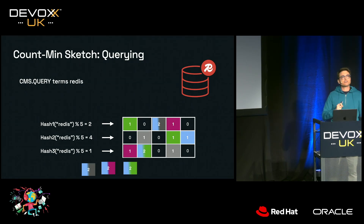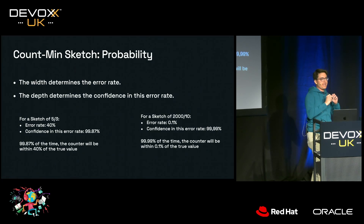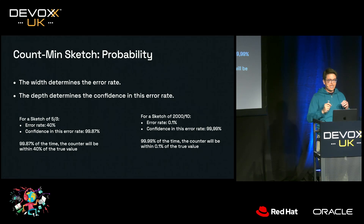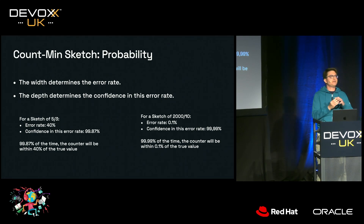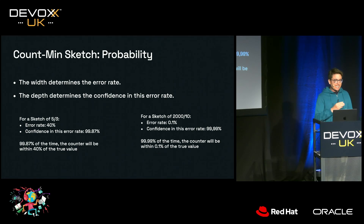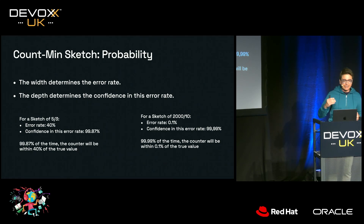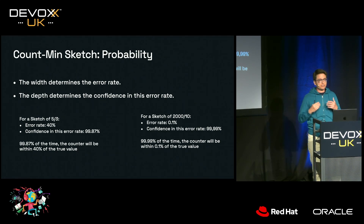We can actually control this probability. We can determine the error rate by the number of columns and the confidence in that error rate by the number of rows when we initialize the CMS. For a sketch of 5 by 3, we could say that 99.87% of the time the counter will be within 40% of the true value. While for a sketch of 2000 by 10, we could say 99.99% of the time the counter will be within 0.1% of the true value.